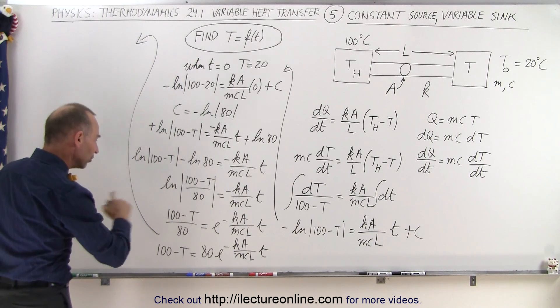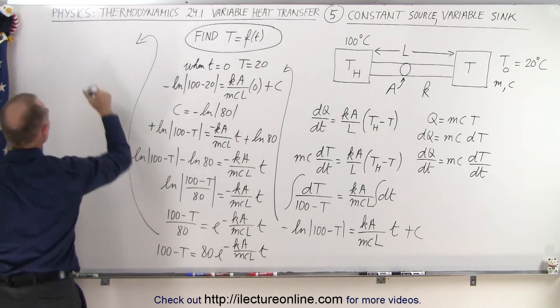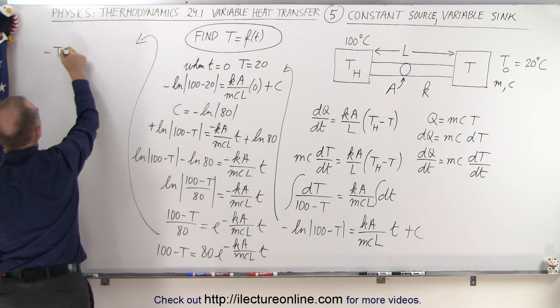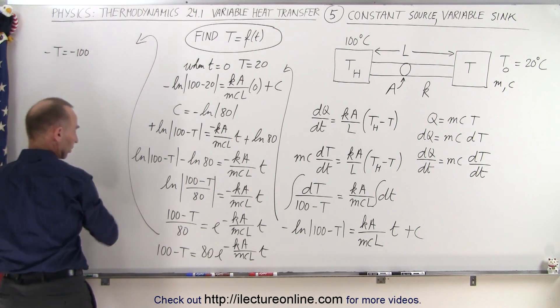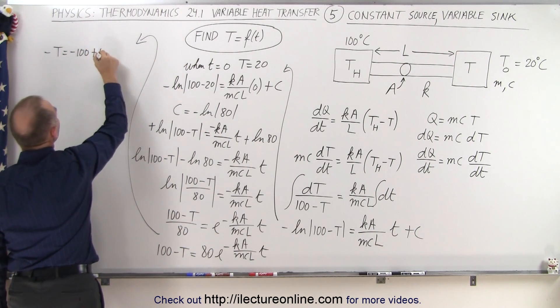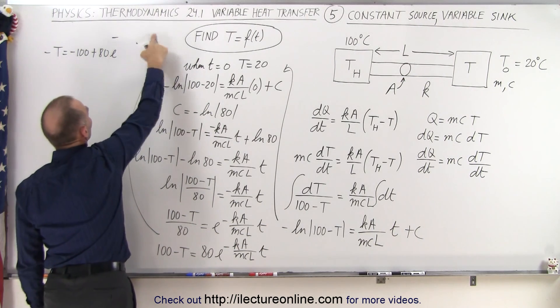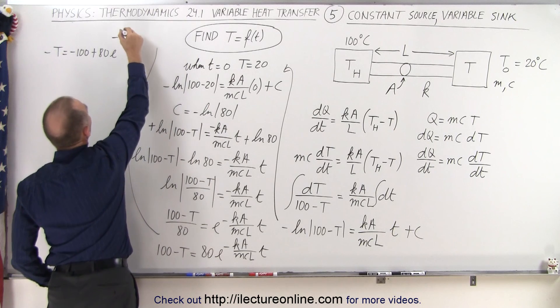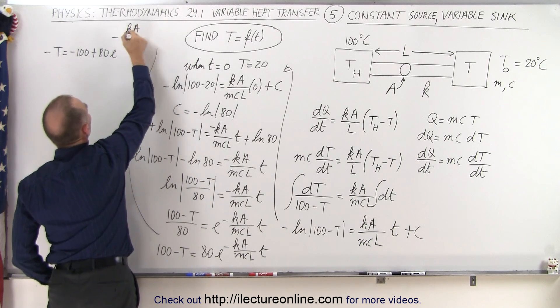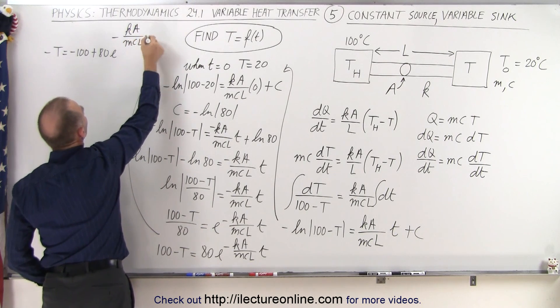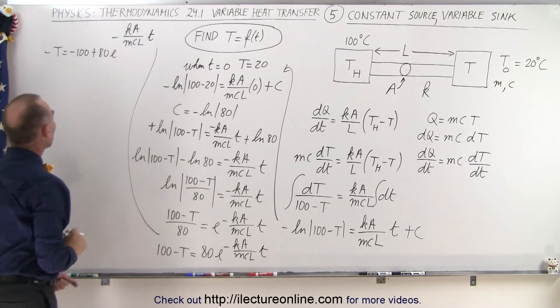So now I'm going to move the 100 to the other side. That gives me minus T is equal to minus 100 plus 80 times E to the minus KA over MCL times T.